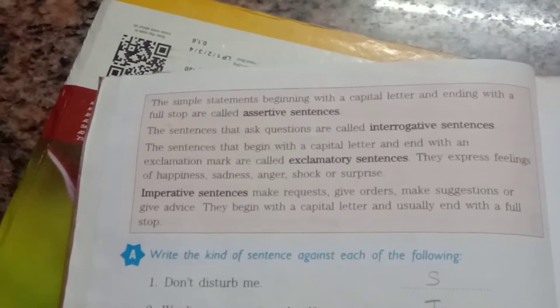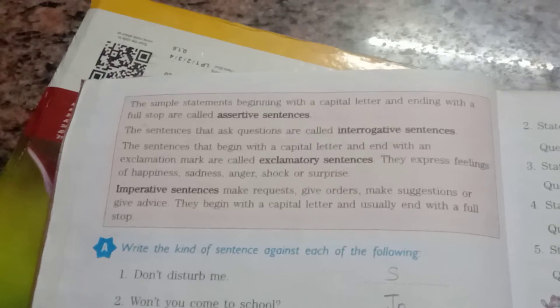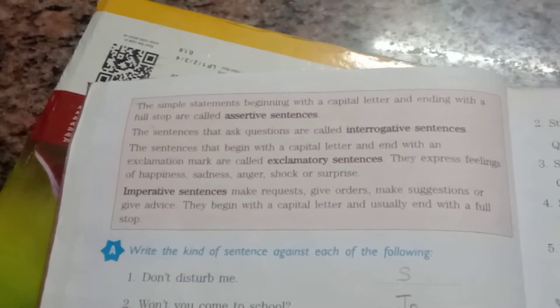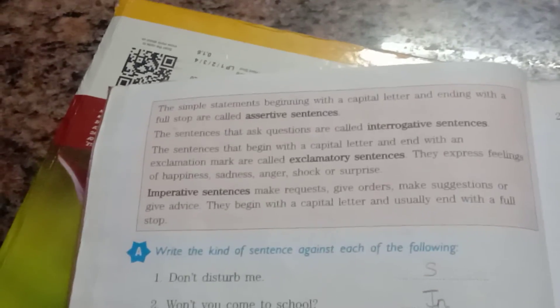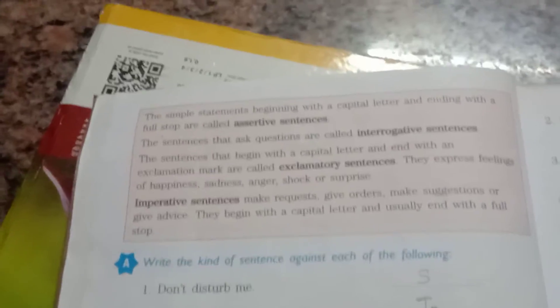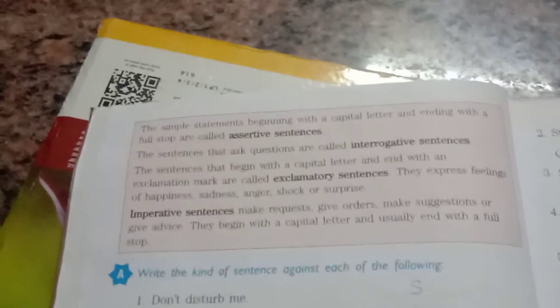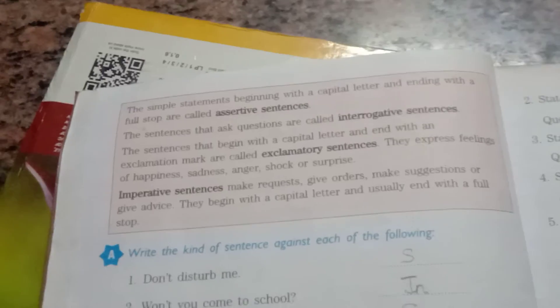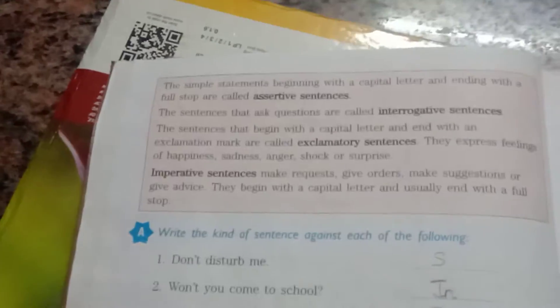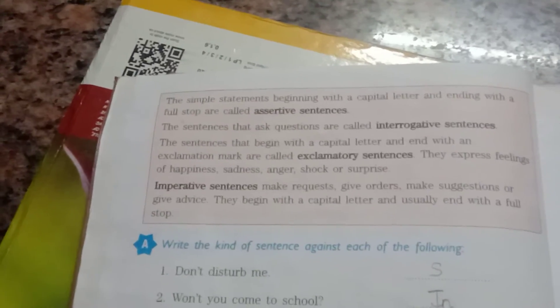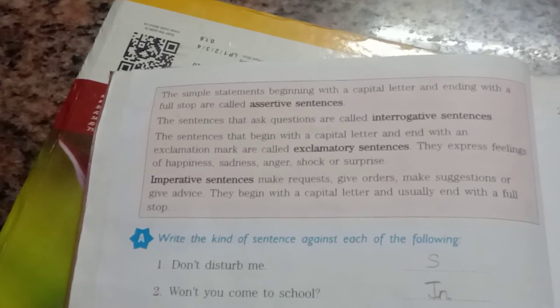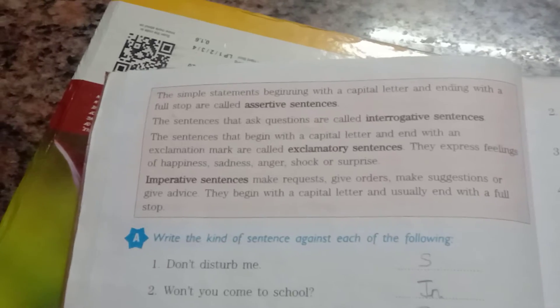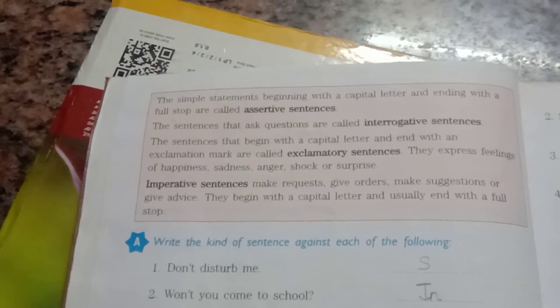The sentence that asks a question is called an interrogative sentence. For example, when you ask your teacher something — if you are a student you will ask, 'Ma'am, I don't know what this is, please explain me.' When you ask questions like that, it is called an interrogative sentence.